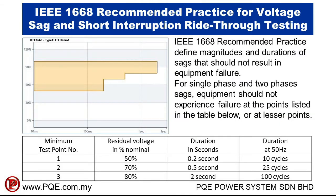IEEE 1668 recommended practice defines magnitudes and durations of sags that should not result in equipment failure. Equipment shall be able to withstand a 50% voltage sag for a maximum of 10 cycles, a 70% voltage sag for a maximum of 25 cycles, and an 80% voltage sag for a maximum of 100 cycles.